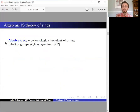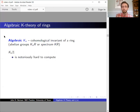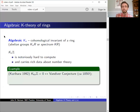Now let's talk about algebraic K-theory. K-theory is a cohomological invariant of a ring or a scheme. The K-theory of a ring is a system of abelian groups which assemble into a cohomology theory — that is, a spectrum in the sense of algebraic topology. Actually computing the K-theory of a ring is notoriously difficult, even for the most basic ring Z. But it carries rich information about number theory. For example, it's believed that the K-theory of the integers is zero in degrees divisible by four, but this is equivalent to the Vandiver conjecture, an open problem in algebraic number theory dating to 1850, which concerns the class number of cyclotomic fields.